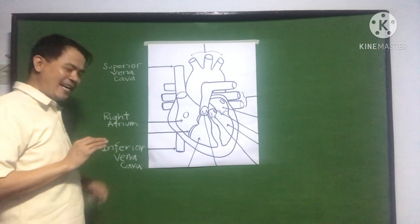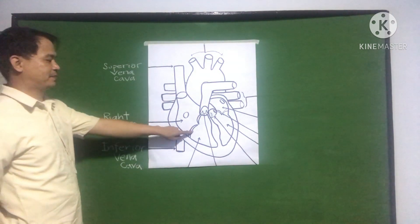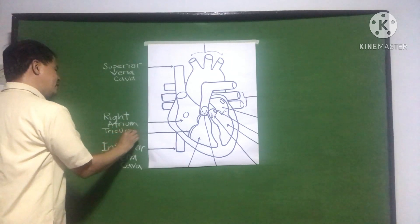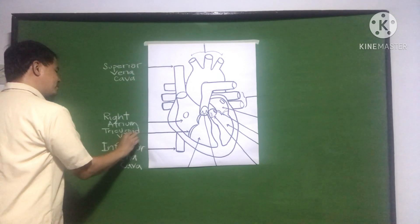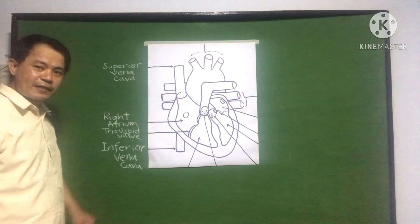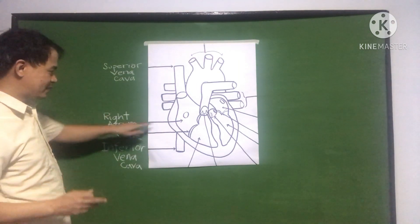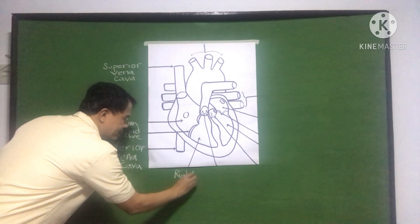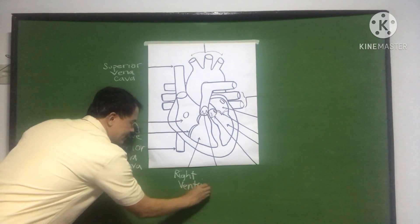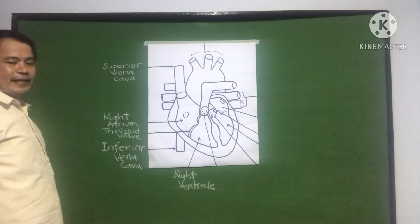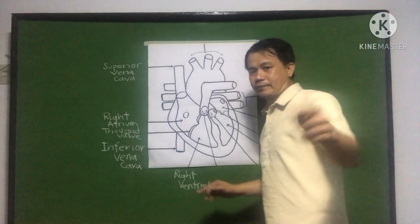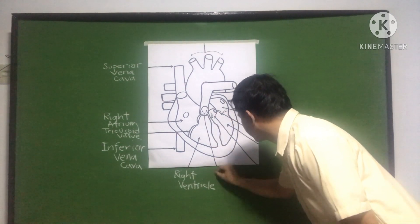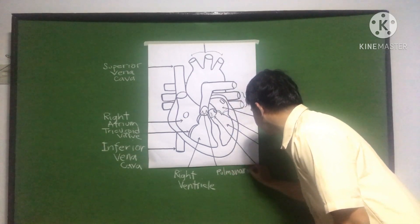Next, the blood goes into this part here — the right atrium. Then the next part after that is the right ventricle. And the blood then passes through the pulmonary valve.